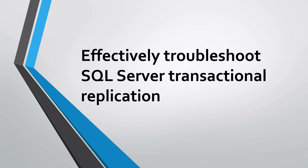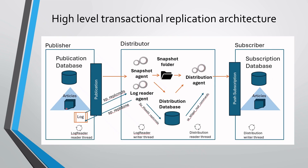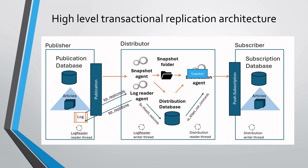Before diving into troubleshooting, let's briefly discuss the architecture of transactional replication. The initial stage of transactional replication is generating a snapshot by the snapshot agent and storing it in the snapshot folder. Then the distribution agent transfers the snapshot to the subscriber.